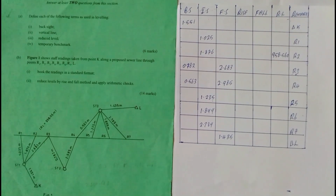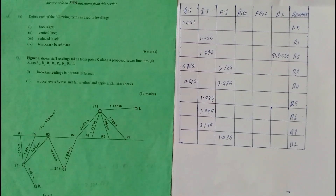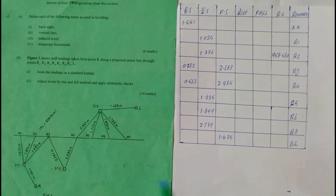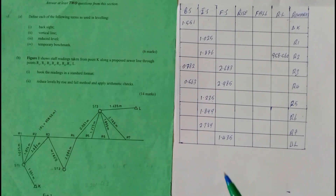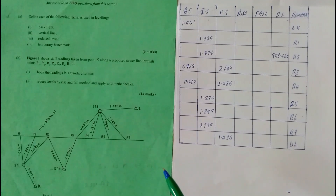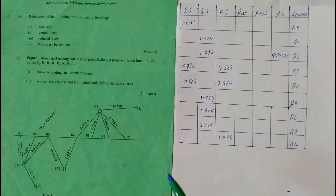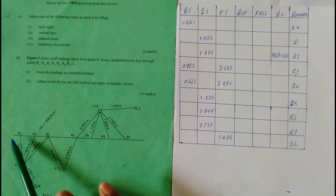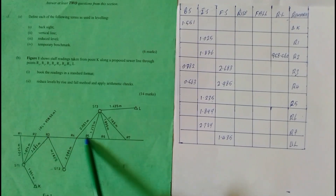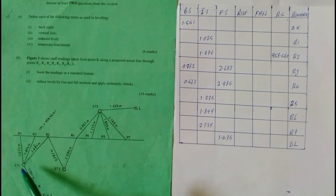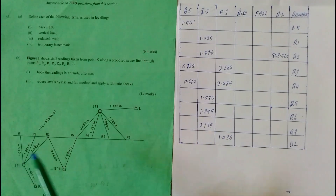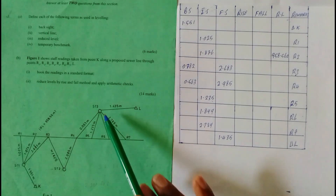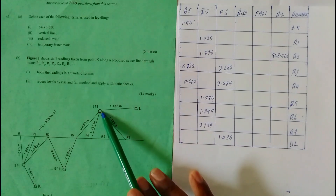Welcome. Today we are going to reduce levels by the rise and fall method from data taken along a sewer line. The data are taken from station 1, station 2, and station 3.